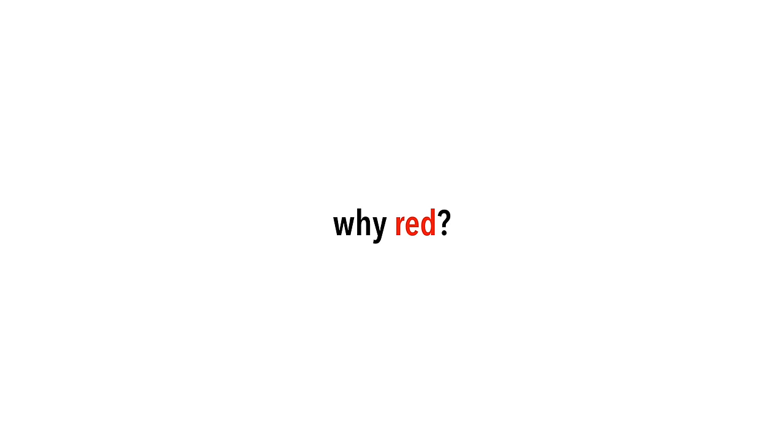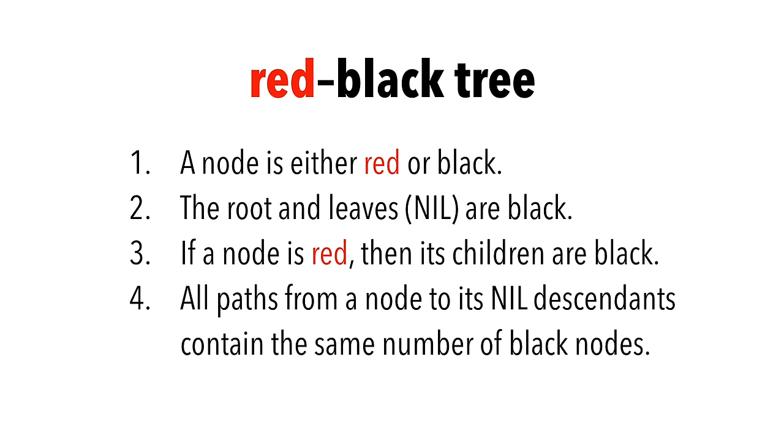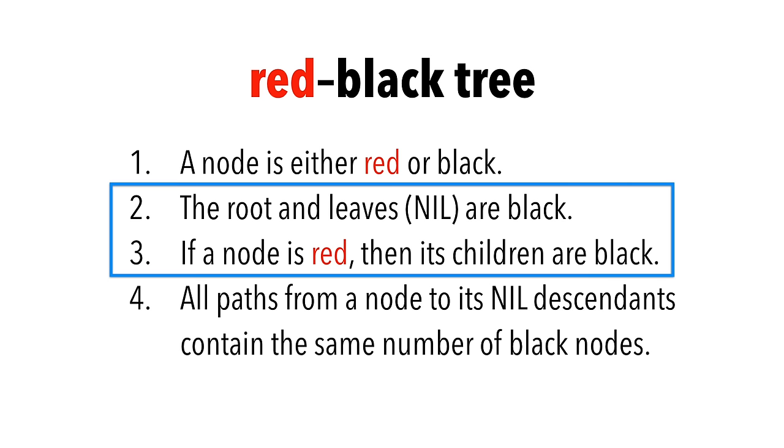You may wonder, why do we color the node red? We know eventually we have to get back to these properties. By coloring the node red, we may break property 2 or 3, but it turns out these violations are fairly easy to fix, and you'll see how.